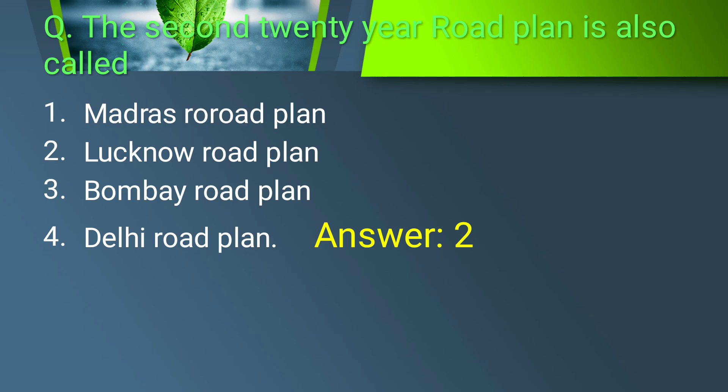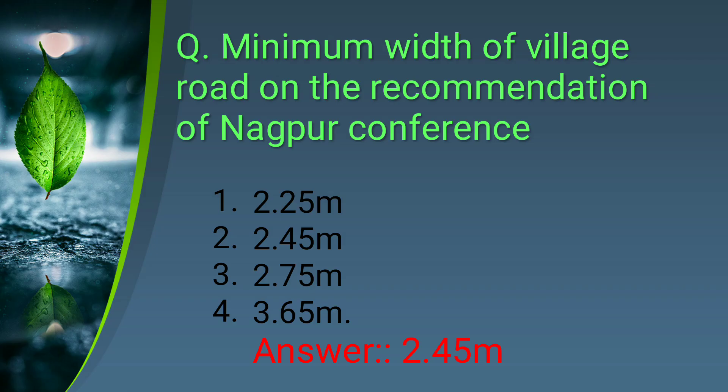The next question: the second 20-year road plan is called what? We have the first 20-year plan, the second 20-year plan, and the third 20-year plan. The answer is the Lucknow road plan — option two is correct.